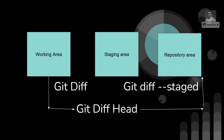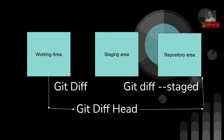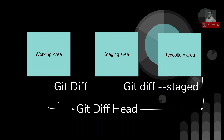If you want to check the difference between the staging area and the repository area, you write `git diff --staged`. And if you want to check the difference between the working area and the repository area, you write `git diff HEAD`.